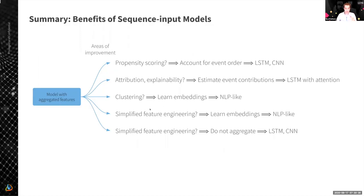If we are interested in customer analytics and clustering of customers or products, we can benefit from learning embeddings in an unsupervised way directly from sequences of orders, sequences of products, or even directly from application logs using NLP-like models like Word2Vec. The same applies to simplified feature engineering: we can use unsupervised embedding learning using NLP models, or we can replace models with aggregated features with LSTM-based models that use individual events, eliminating the necessity to aggregate entire customer journeys into features and instead only engineering features for individual events, which is generally simpler.